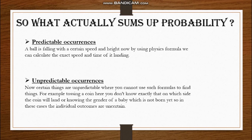Probability is all about unpredictable events. We know that if a ball is thrown, and we know its height and speed, we can calculate its path using physics formulas. But when we talk about unpredictable events, we use probability. For example, the gender of a baby — you don't know if it will be male or female. So probability helps us deal with uncertainty.